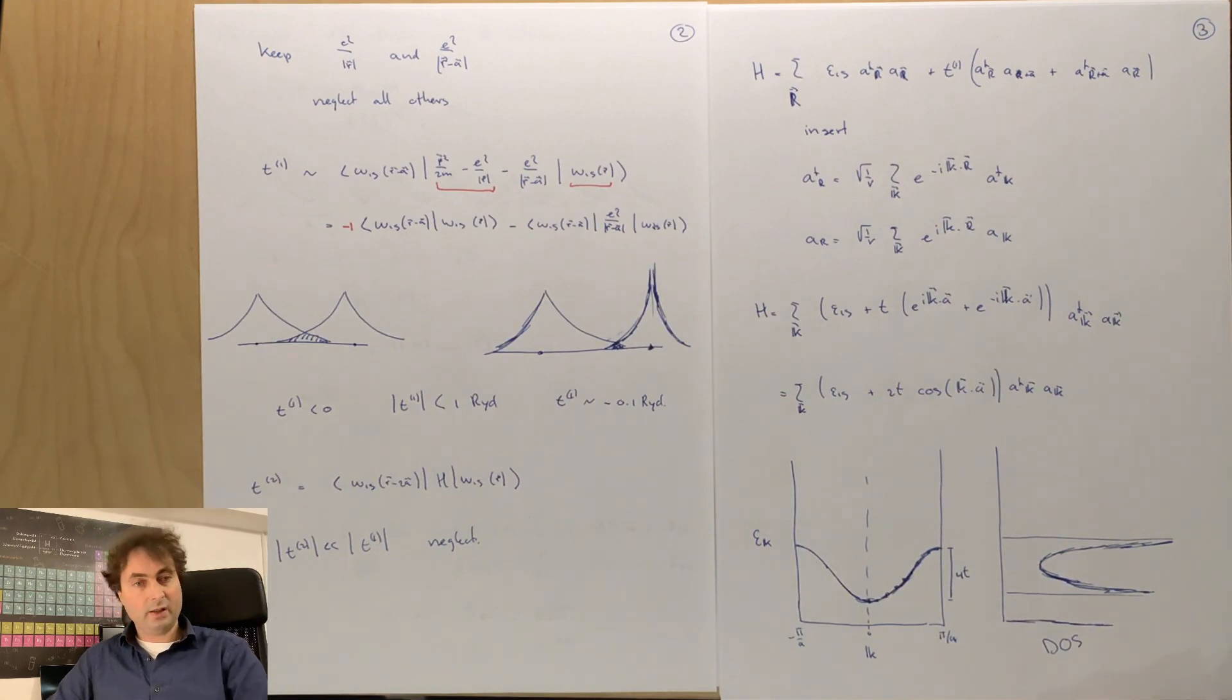So we've seen here an example how we can work with tight binding theory, and in the next video I want to now have a look at a comparison between a tight binding model and a free electron state. Thank you very much for now. We see each other in the next video. Stay healthy.